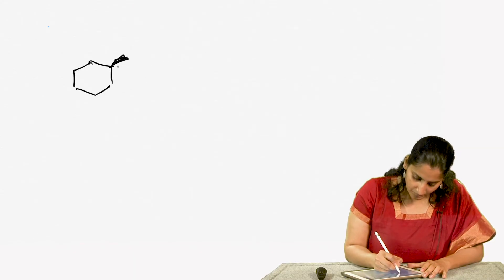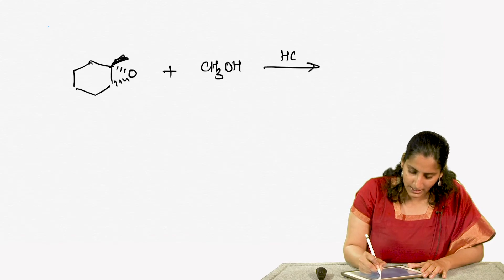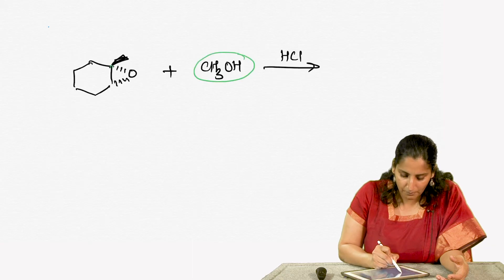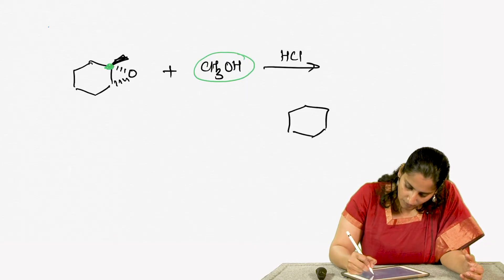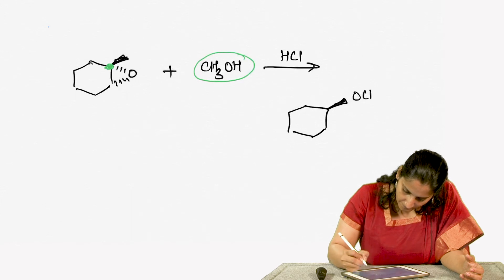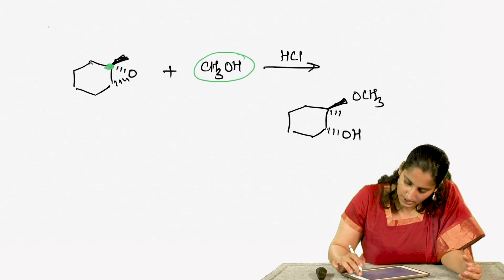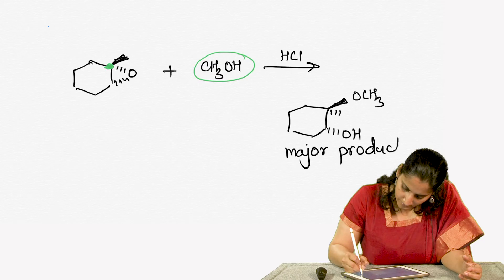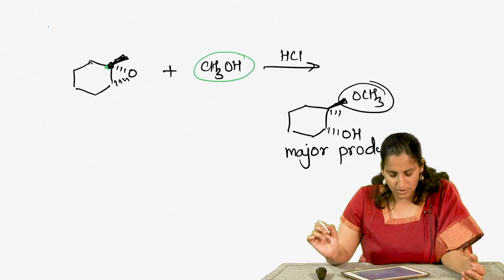To give a specific example: if we start with a given epoxide and put it in methanol and HCl instead of water, the final product almost always shows the methanol ending up on carbon number 1, the more substituted carbon. This molecule is seen as the major product, wherein the OCH3 is attached to the carbon that had more substitution.